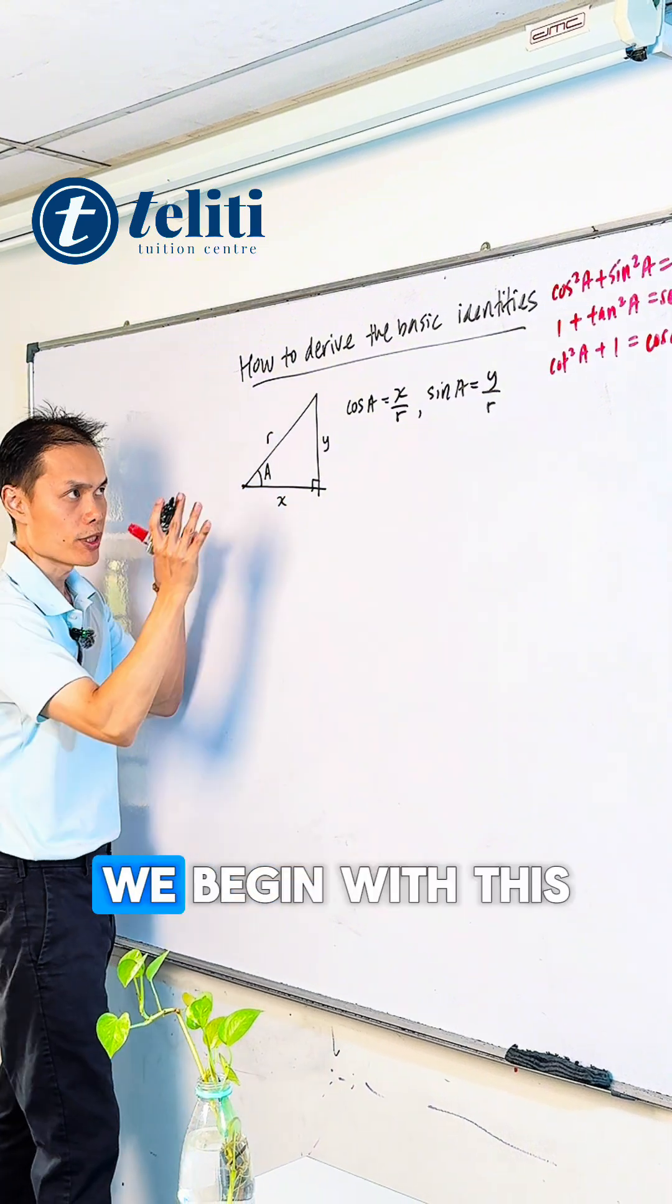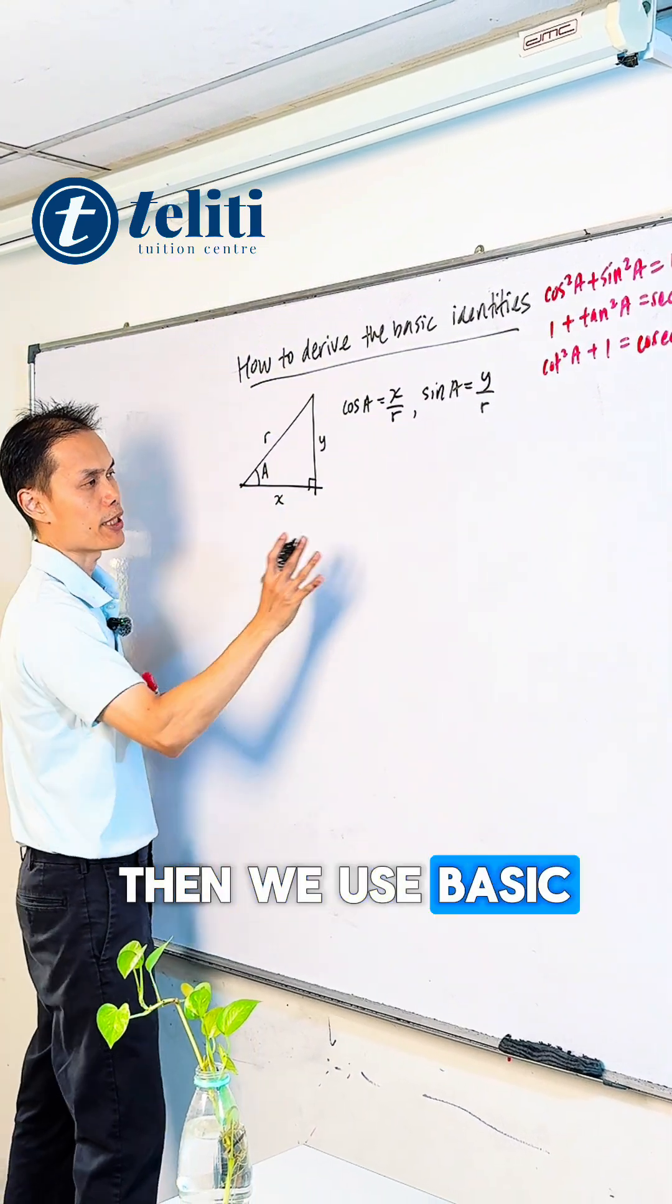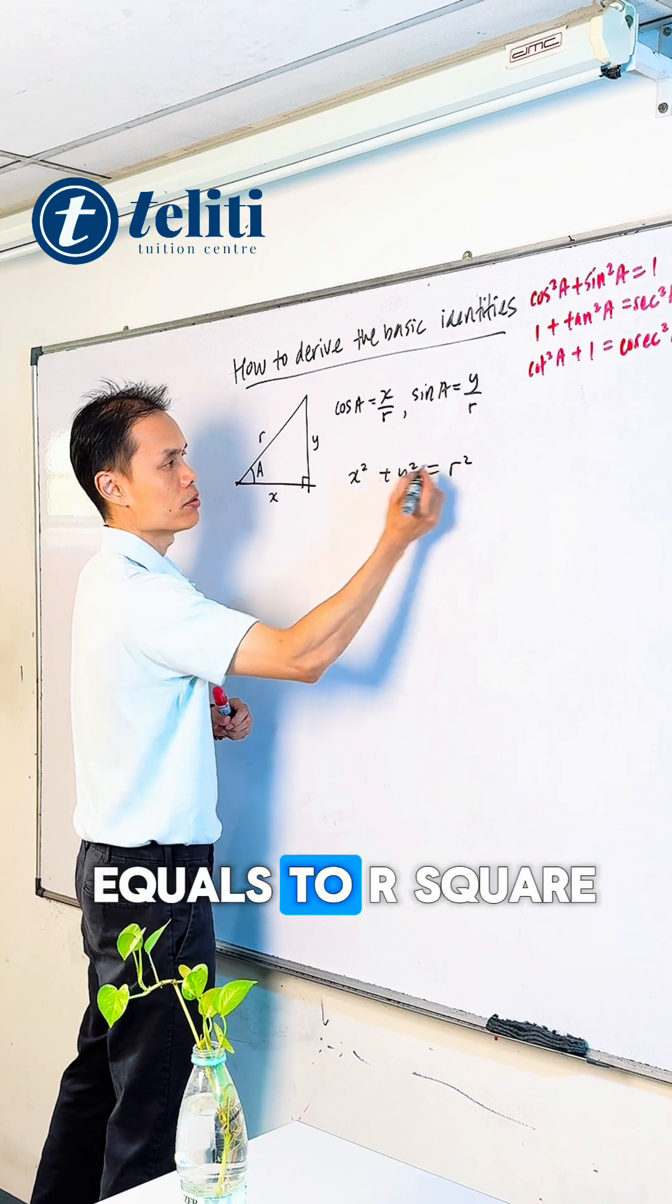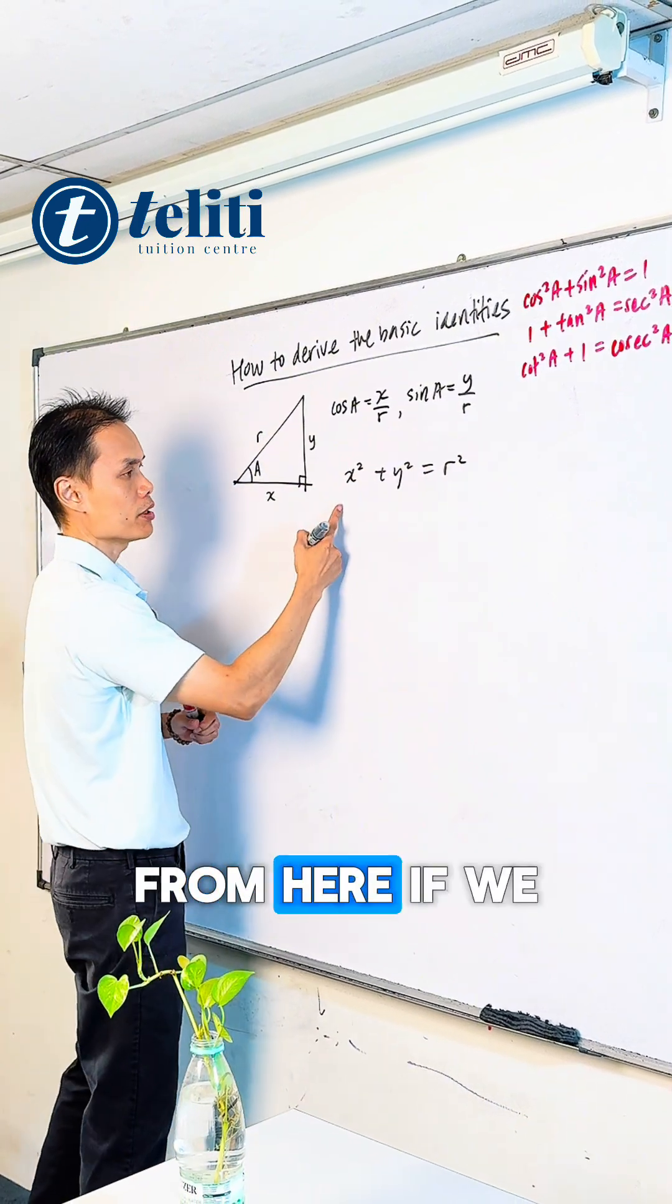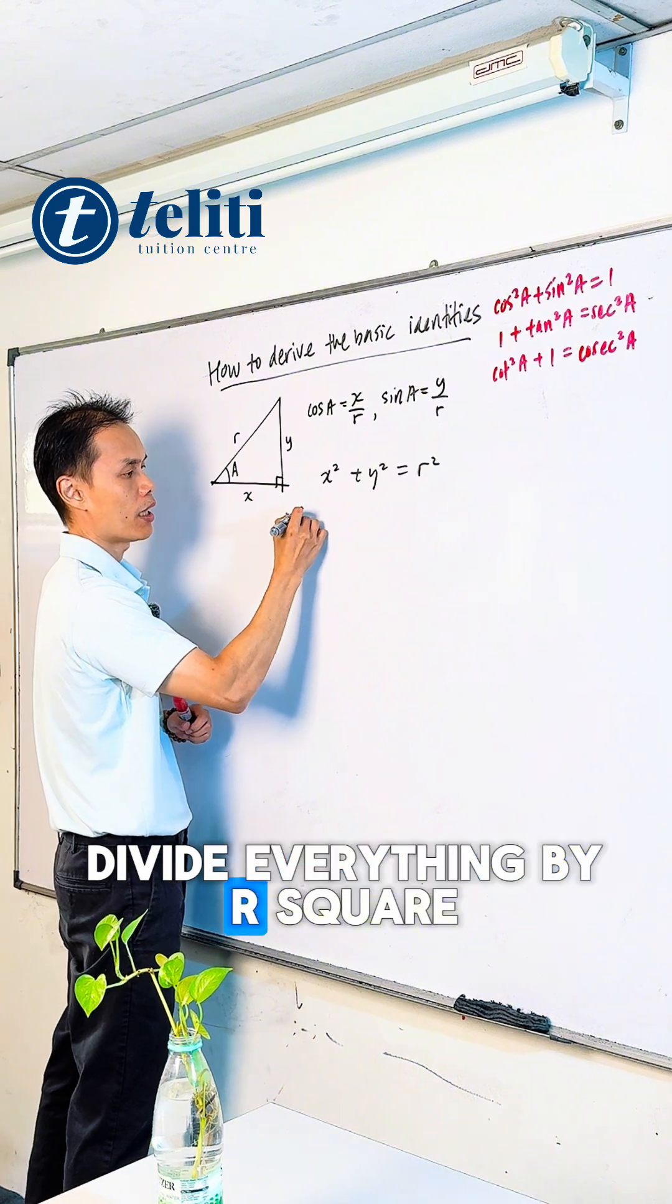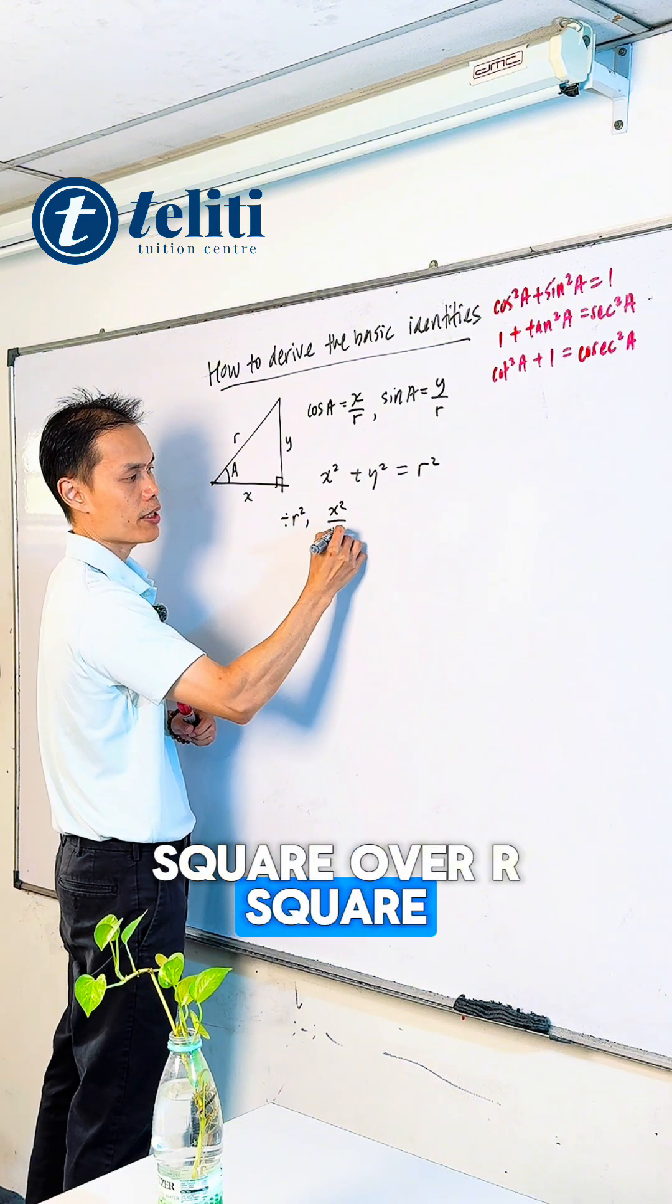Then we use the Pythagorean theorem. We know X² + Y² = R². From here, if we divide everything by R², you will get X²/R² + Y²/R² = R²/R².